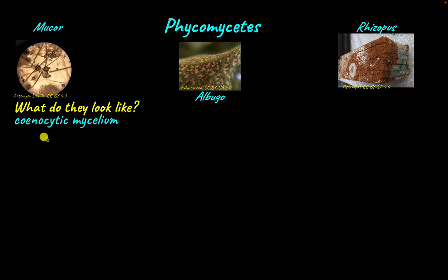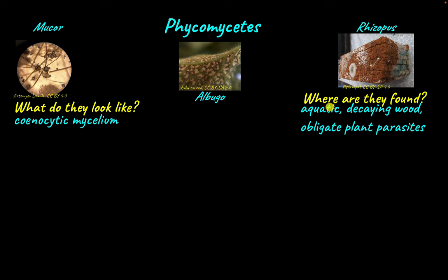Phycomycetes have a cenocytic mycelium, which means their mycelium is continuous. They are majorly found in aquatic environments. Some are found in decaying wood, moist places, and soil, and some are obligate plant parasites. Albugo is extensively a plant parasite.